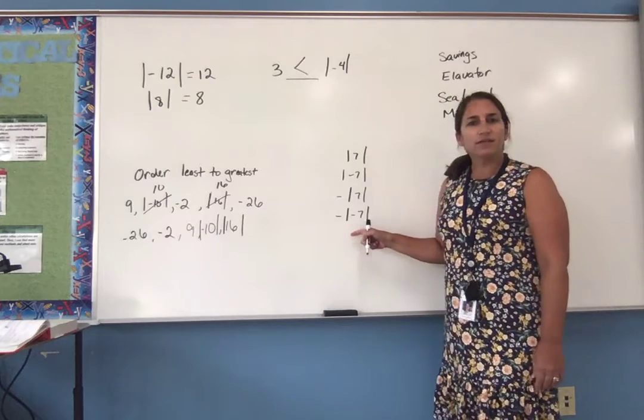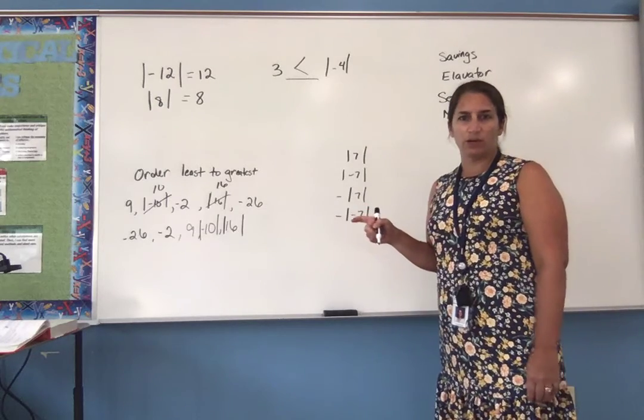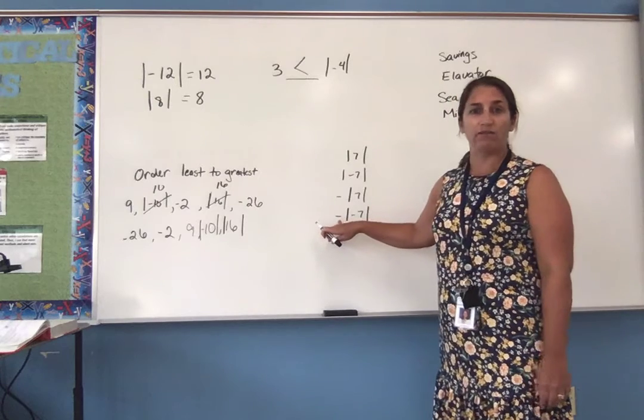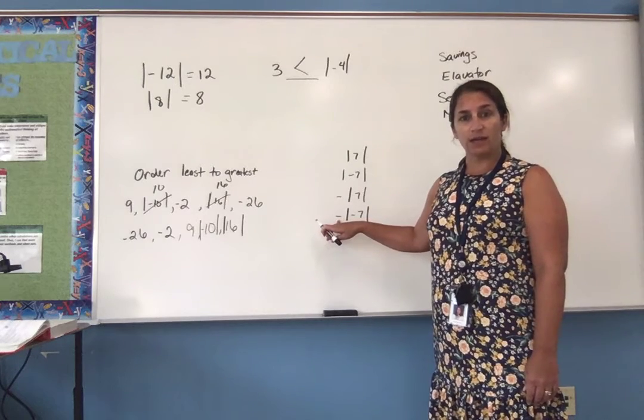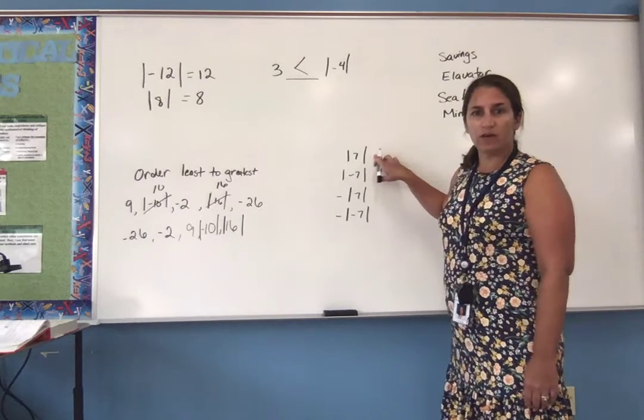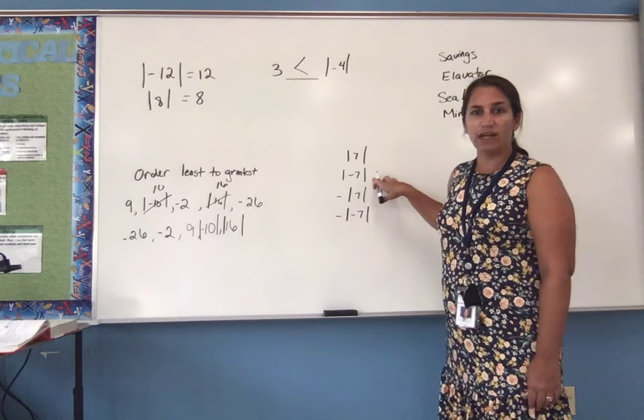And then last, there's a section that has some absolute value expressions that are a little bit more complicated because some of them have the negative sign on the outside of the absolute value symbols. So when we look at these first two, absolute value of 7 and absolute value of negative 7, those are the same number.